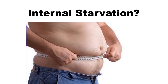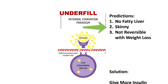So there's a real problem with the internal starvation paradigm. It would predict that in insulin resistance and type 2 diabetes there should be no fatty liver, that people should be very skinny, and that it shouldn't reverse with weight loss. Because if those cells give up their fat, how would that make insulin work better? The answer is it doesn't. The solution under this paradigm is to give more insulin, which is what we've done for many years — but all of those predictions are wrong.